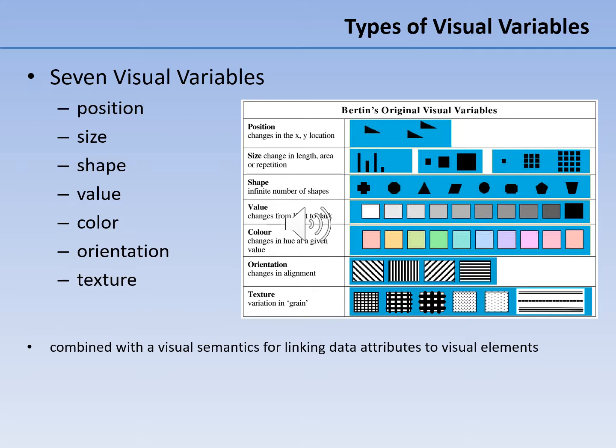Orientation refers to the direction labels and symbols are facing on a map. Although it is not as often used as many of the other visual variables, it can be useful for communicating information about real-world orientation of features. Common examples include wind direction and the direction in which a stream flows. Texture refers to the aggregate pattern made up of many individual symbols. For example, a dense network of lines represents streets, and these can be collectively used to convey the concept of an urban area.